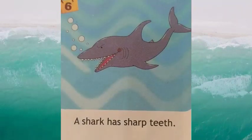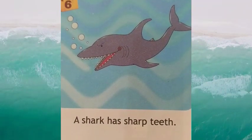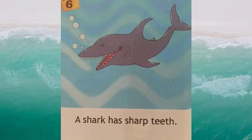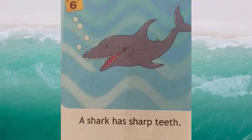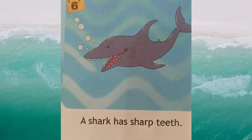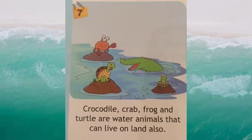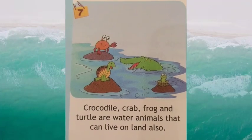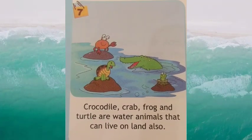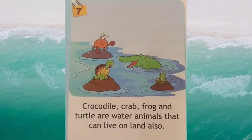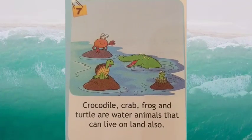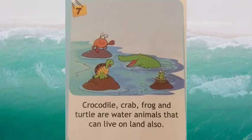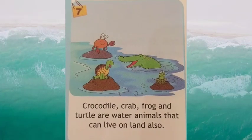Box number six: a shark has very sharp teeth. Shark ki teeth bahut tej hoti hain. Box number seven: crocodile, crab, frog and turtle are water animals that can live on land also. Magarmach, crab, frog aur turtle ye paani ke jaanwar hain jo zameen par bhi reh sakte hain.